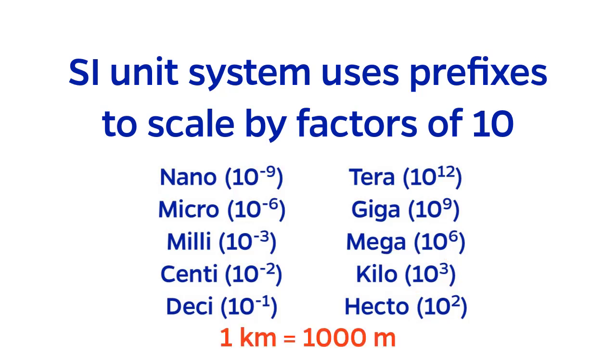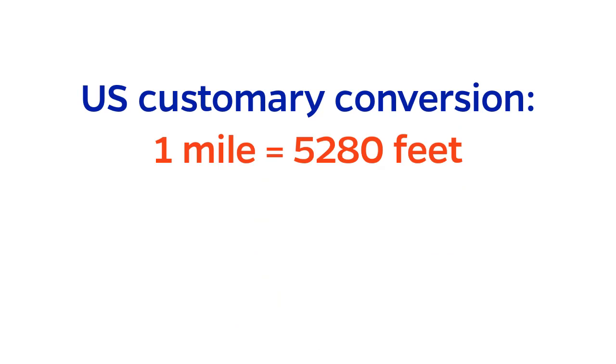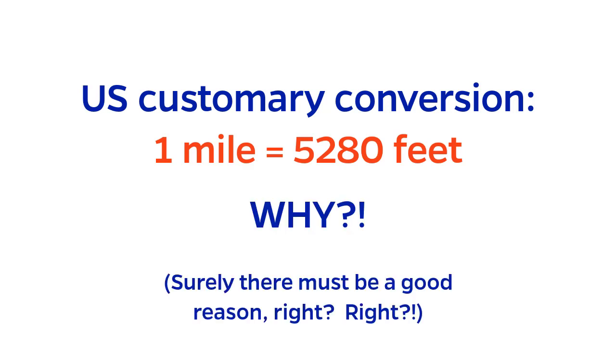In contrast, the analogous conversion in US customary is one mile equals five thousand two hundred and eighty feet. Who decided upon that number? I have no idea, but I really hope that there is a good reason for it, because I am very annoyed that this is something that I have to memorize.